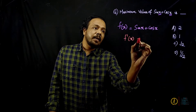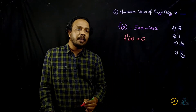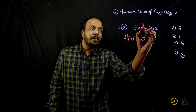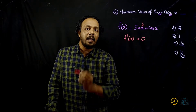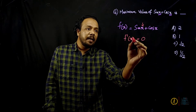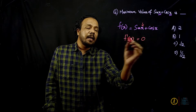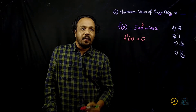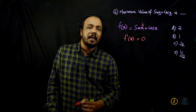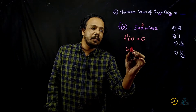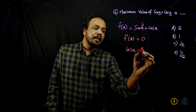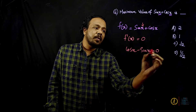What is the maximum value of x? We will differentiate the function. Here we will differentiate sin x plus cos x. The derivative of sin x is 1 (cos x), and the derivative of cos x is minus sin x. So cos x minus sin x is equal to 0.